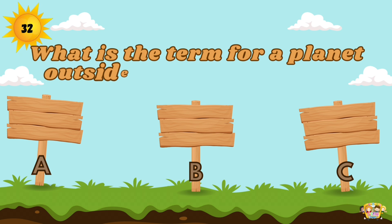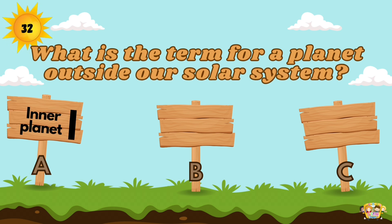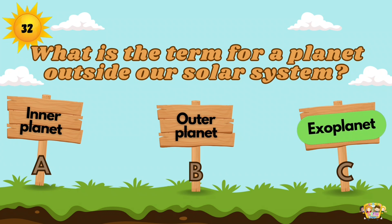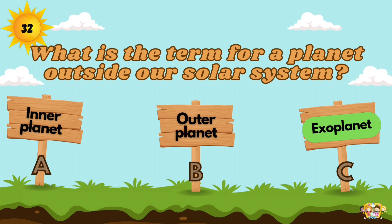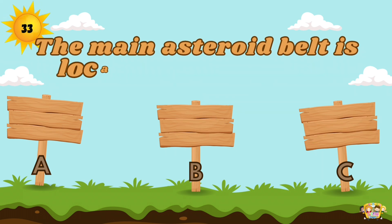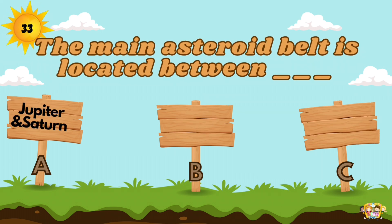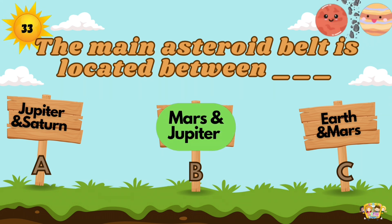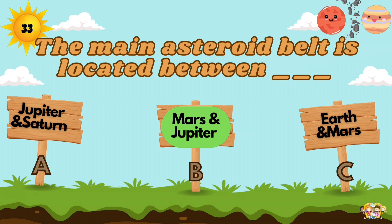What is the term for a planet outside our solar system? The planets beyond our solar system are called exoplanets. The main asteroid belt is located between Mars and Jupiter.